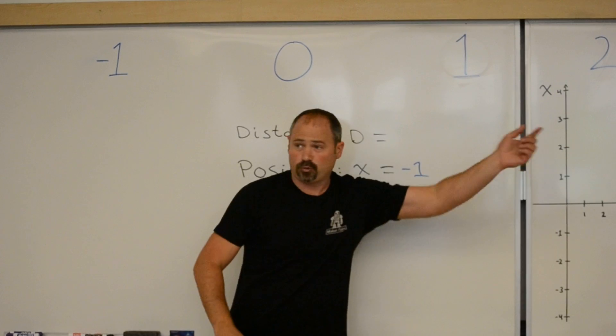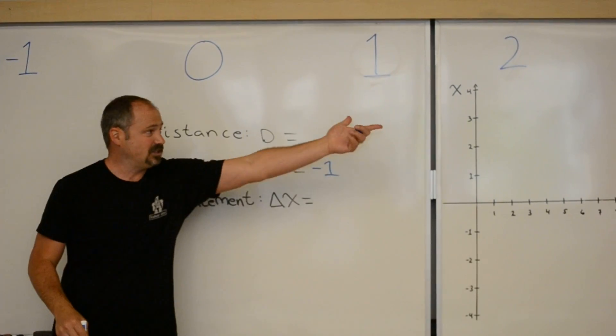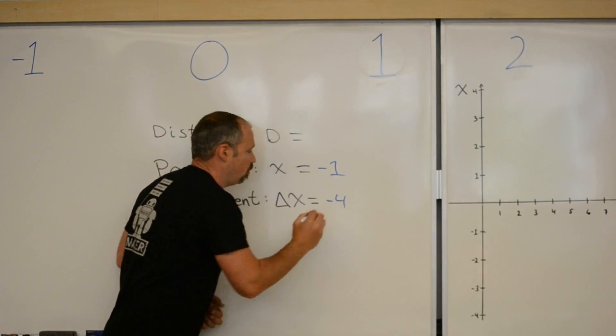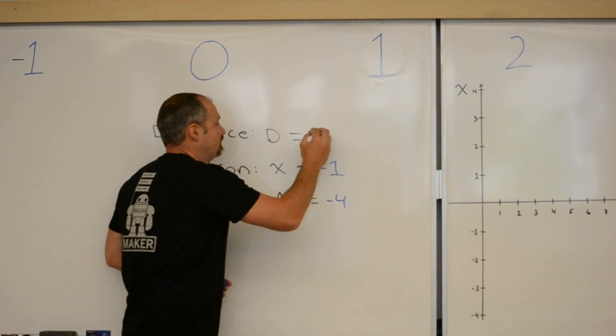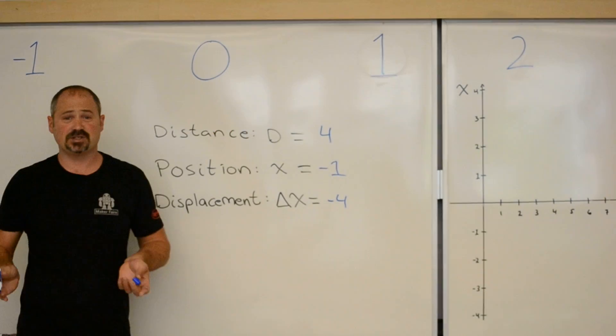My displacement, well, I went from 3 to negative 1, that's a difference of negative 4, so my displacement is negative 4, and my distance is 4, because I went 4 steps.